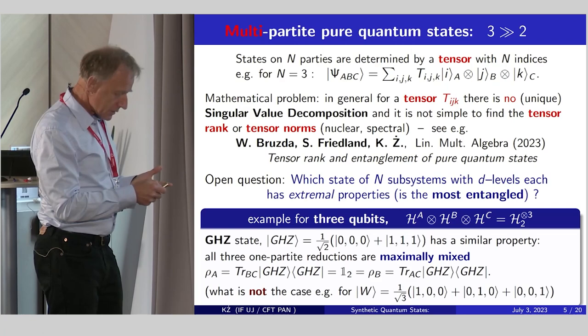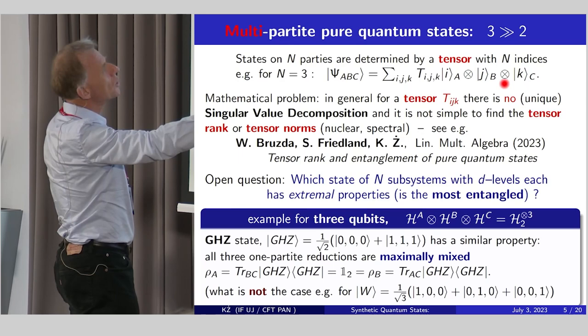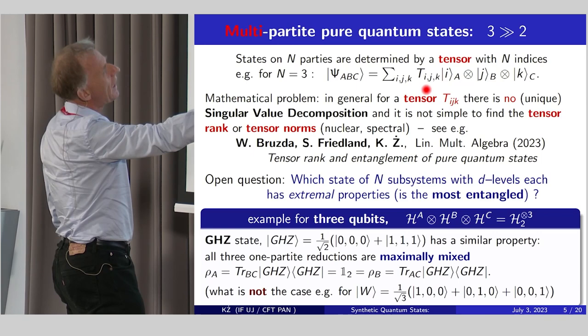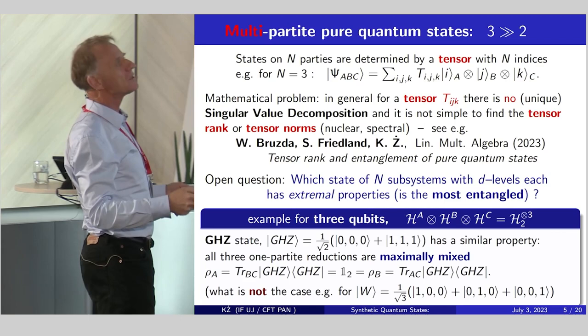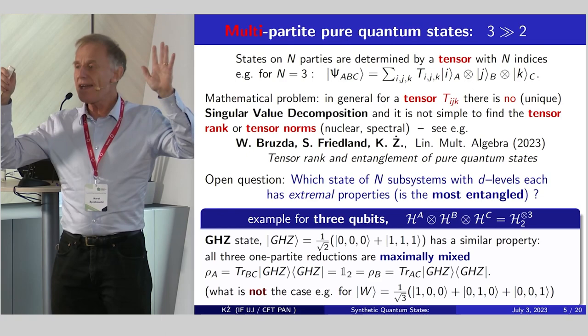Here for me, multi means three or more. And now you'll see immediately where the problem starts. If I have three-partite states, let's say A, B, C, then this pure state in the product basis can be written not by a matrix, by a tensor T_ijk with three indices.